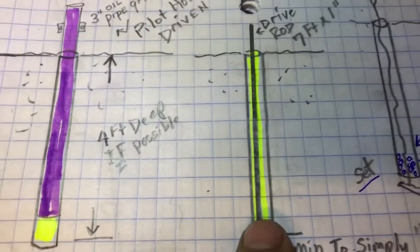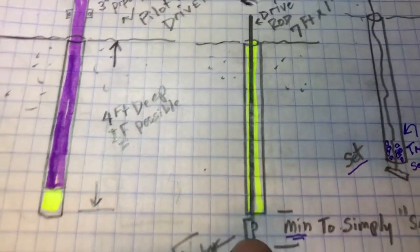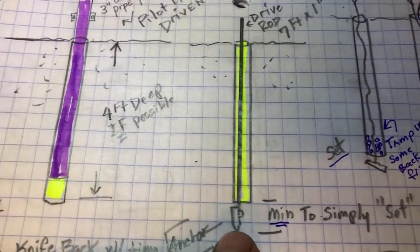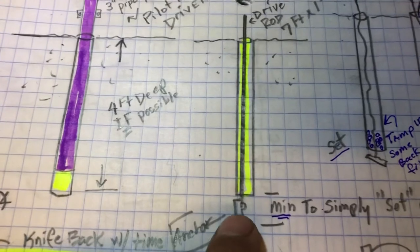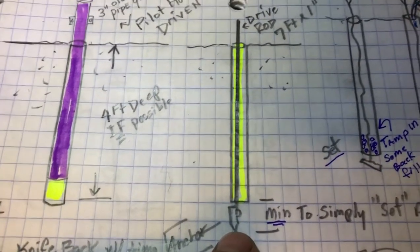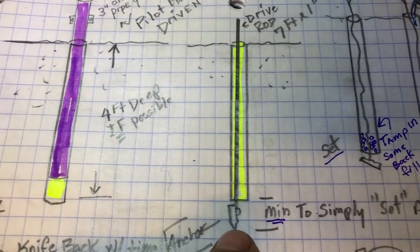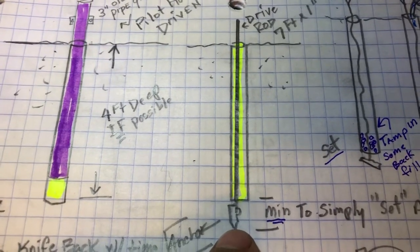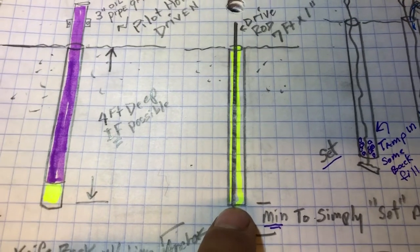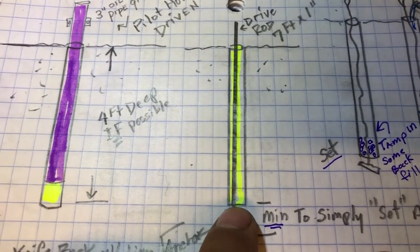Then you're going to take your 7-foot contractor drive rod, put it on your number 4 gripple earth anchor, and you're going to drive that in a little bit more, just enough to set it. You don't want to bend that drive rod. And it's possible that there may be compaction at the end of this hole with rock, and you may not be able to.